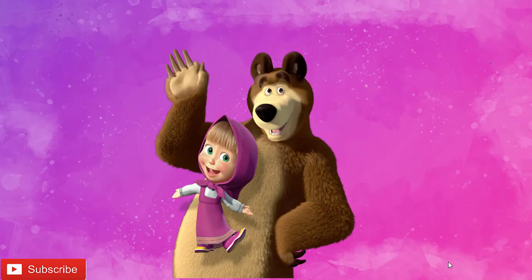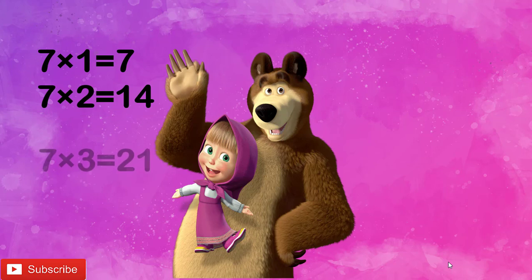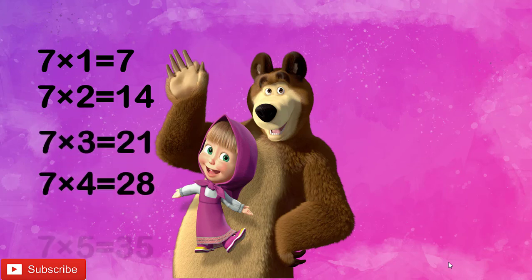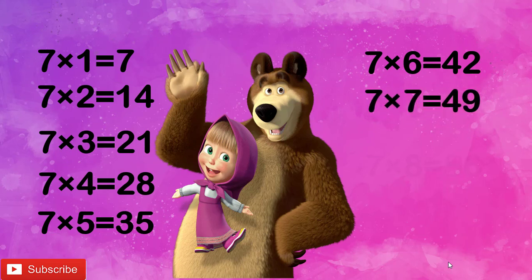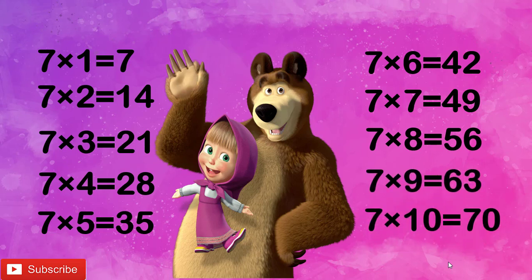Now let's revise once children. 7 1's are 7, 7 2's are 14, 7 3's are 21, 7 4's are 28, 7 5's are 35, 7 6's are 42, 7 7's are 49, 7 8's are 56, 7 9's are 63, 7 10's are 70.